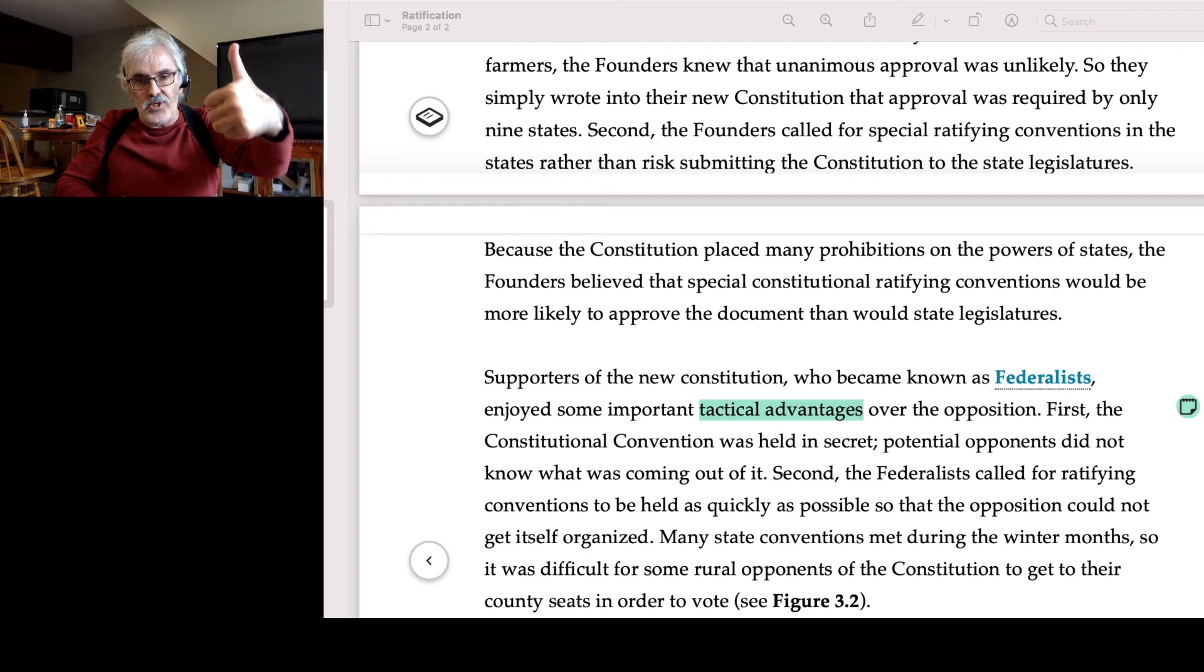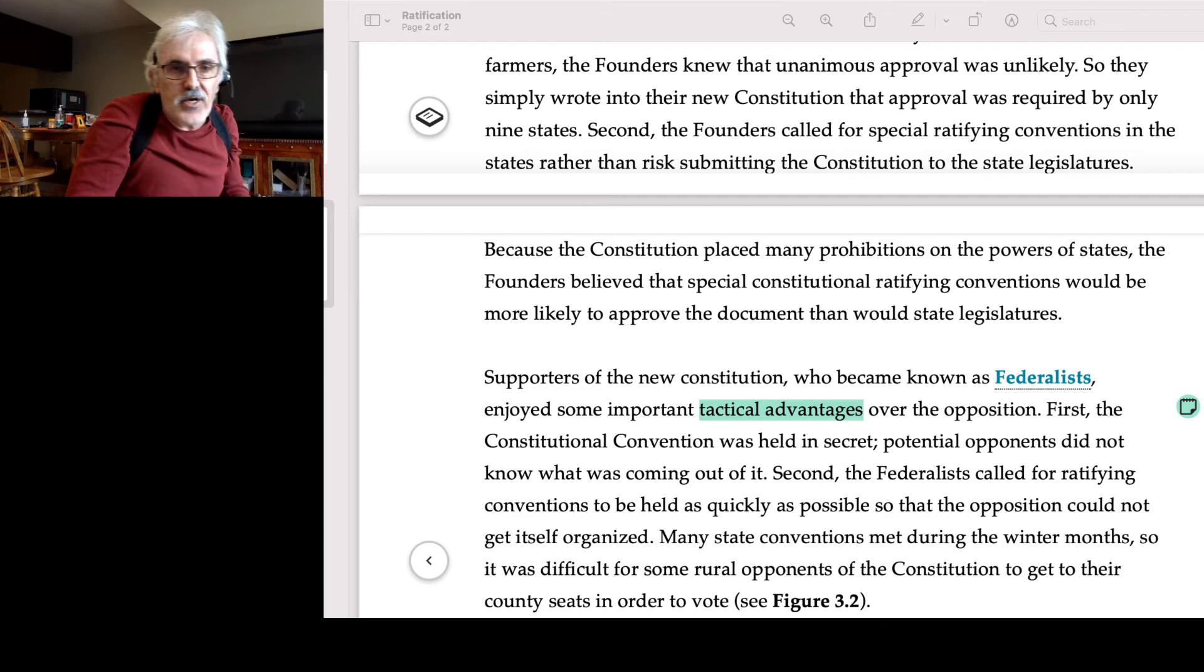The Articles of Confederation, the law of the land, required all 13 states approve constitutional change. Knowing that they would lose, the Founding Fathers only required nine out of 13. Is this illegal? Yes. Was this unconstitutional? Yes. Was this peaceful? Yes. Was this a coup d'etat? Yes. Only the author of this book wants to call it complete departure.